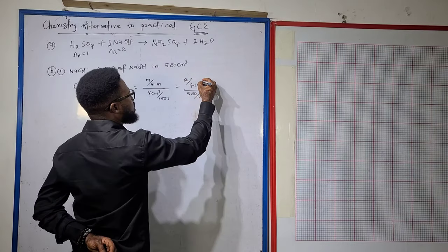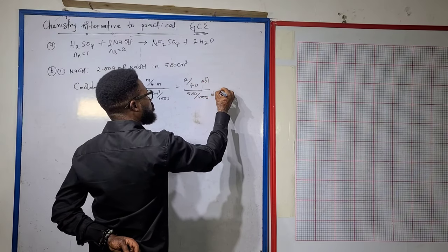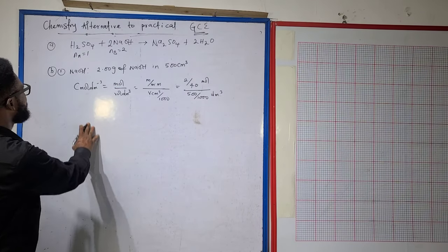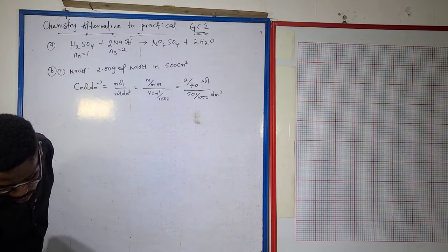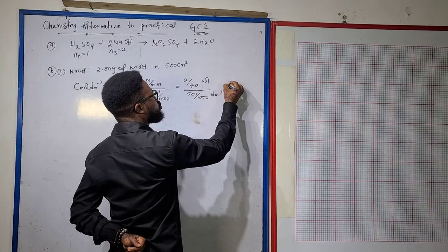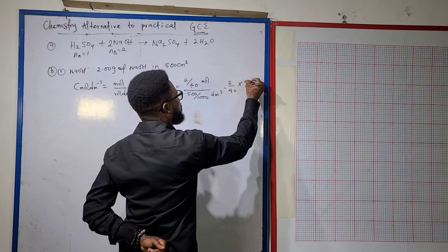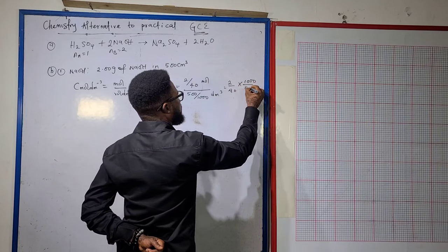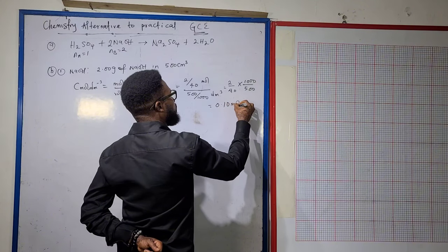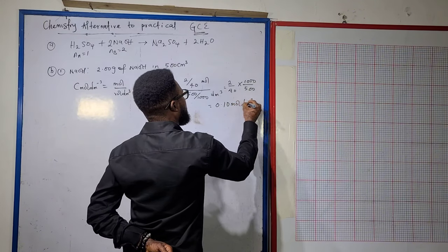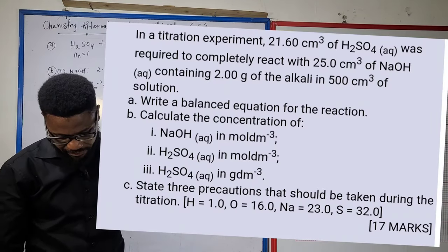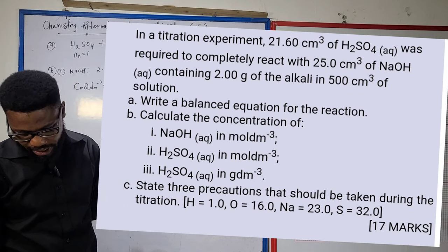That means 2 divided by sodium hydroxide molar mass of 40, divided by 500 over 1000. This equals 2 over 40 times 1000 over 500, which gives me 0.10 moles per dm³. I have been able to deal with question b1.